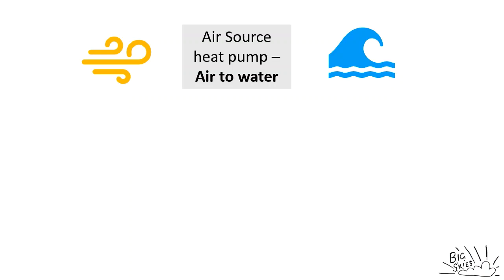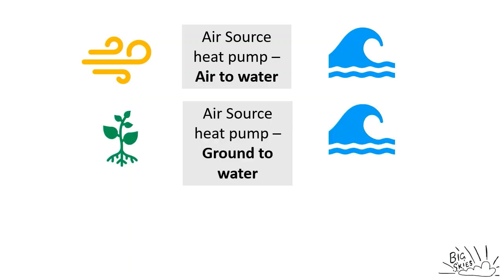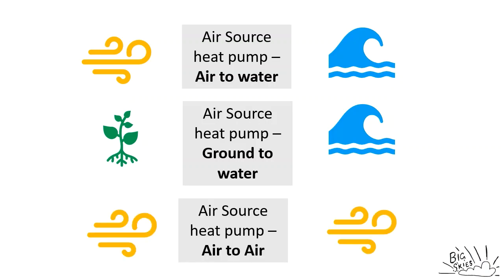In the UK, most heat pumps fitted are either air-to-water or ground-to-water — they take heat from the air or ground and transfer it to water, which is then pumped around our houses and central heating systems. Air conditioning systems are slightly different; they take heat from the air but push it out in the form of warm air into the house. This means we're talking about a heating source rather than something that provides hot water for showering, bathing, or washing up.